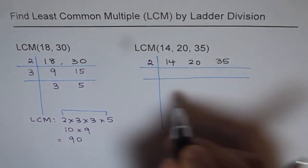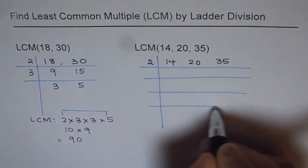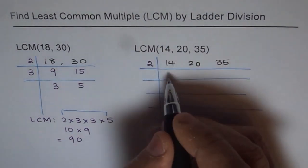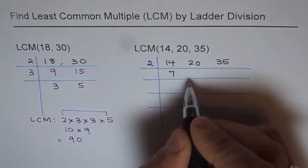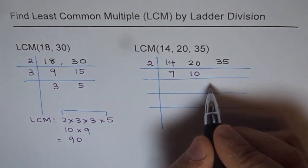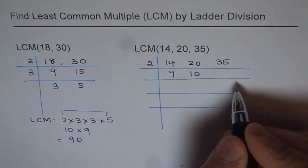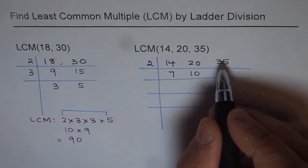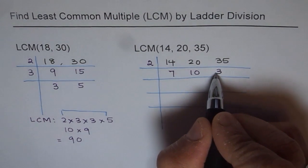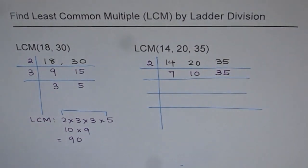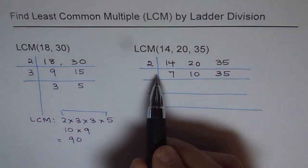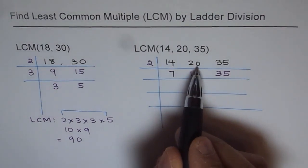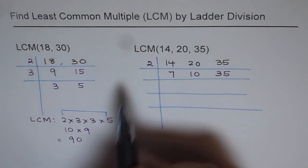The prime number 2 is a good number to start with always. If you divide by 2, you get: 2 goes 7 times in 14, 10 times in 20, and 2 is not a factor of 35. So in this case, just copy the number 35 as such. But at least we factored out 2 from 14 and 20 and we are a step closer to the least common multiple.